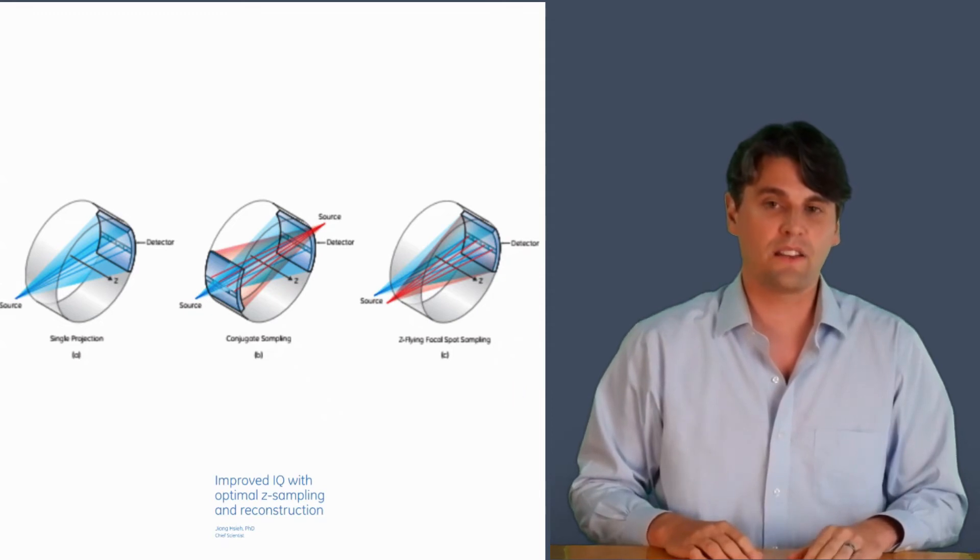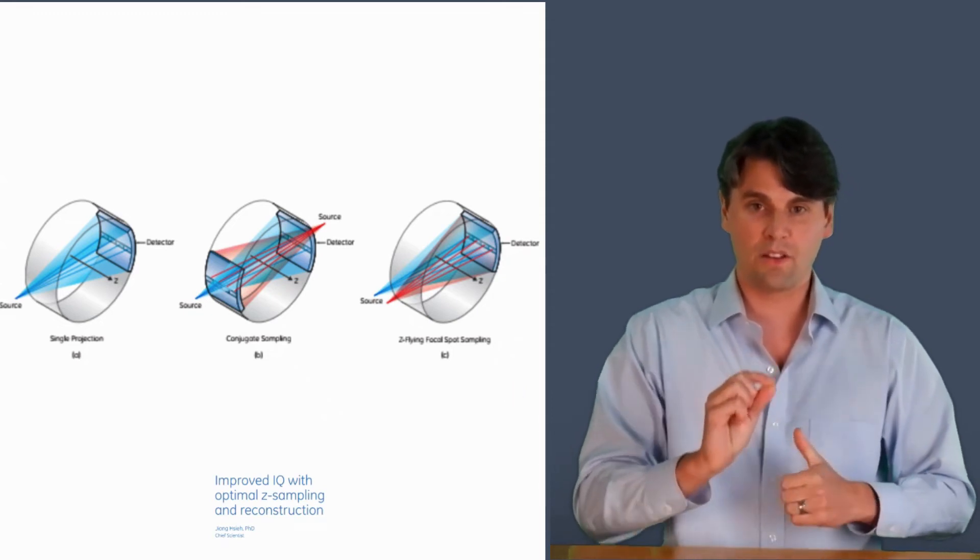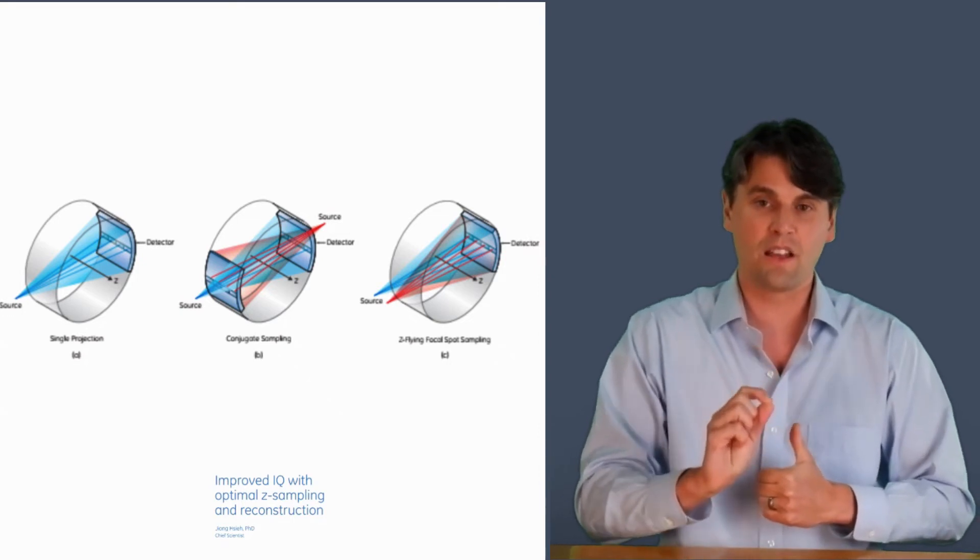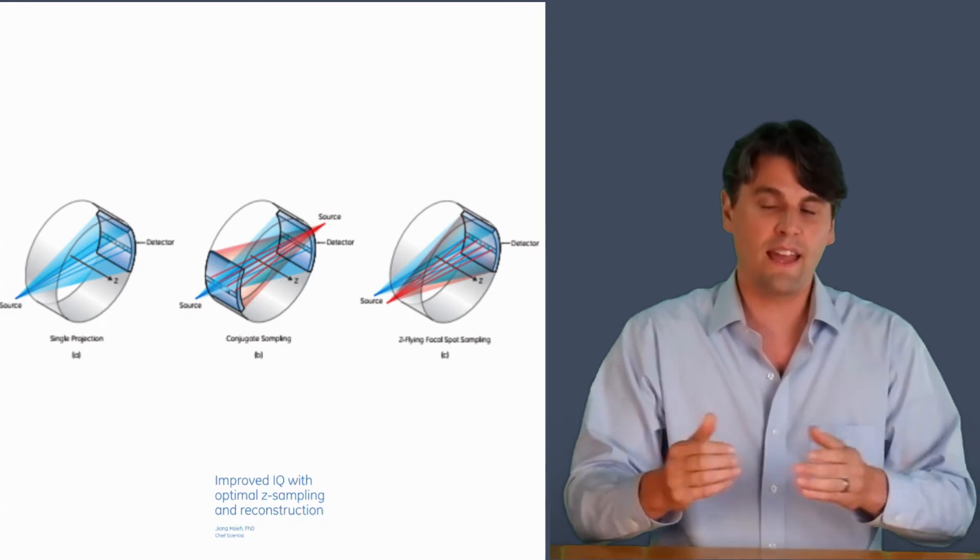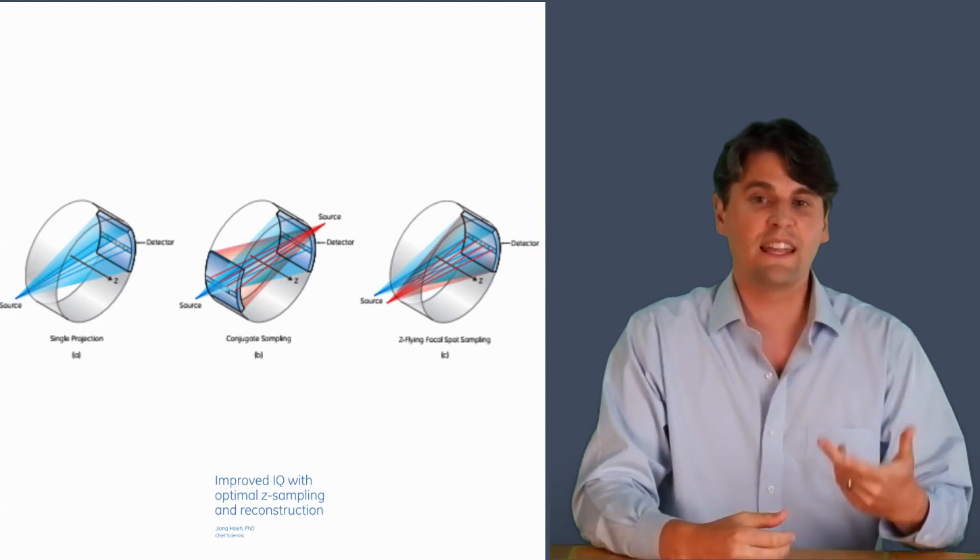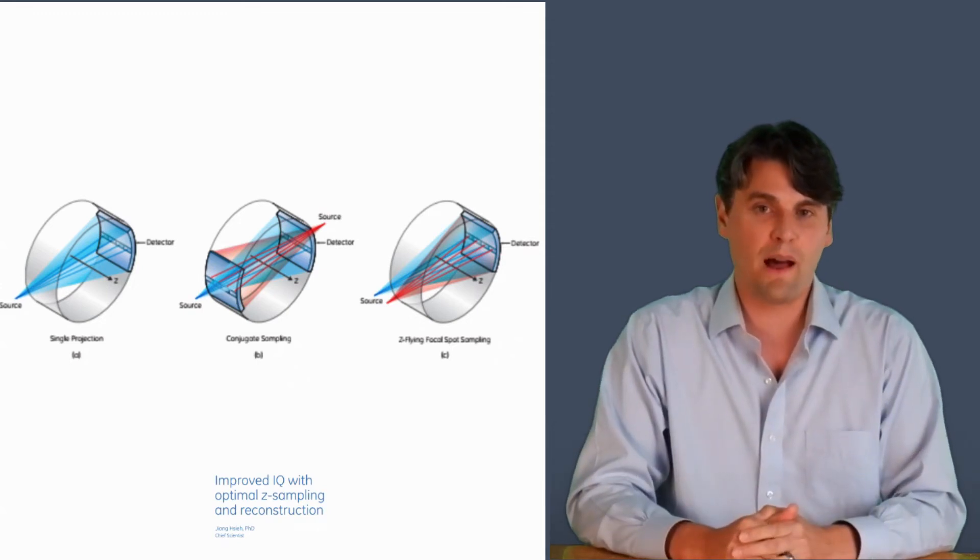One way is to use what is called focal spot deflection in the z-direction. And if you do focal spot deflection in the z-direction, then your focal spot is moving essentially up and down in this direction as the tube is rotating around. And you can take those acquisitions and increase your sampling by having that focal spot deflection.